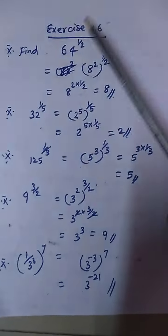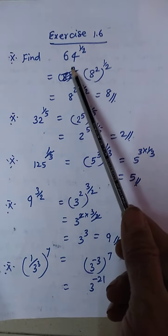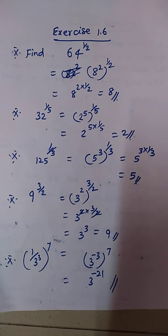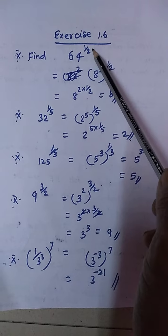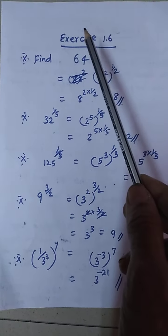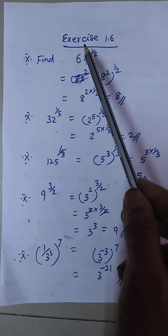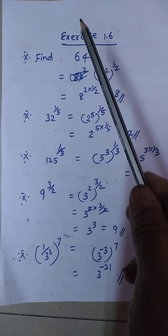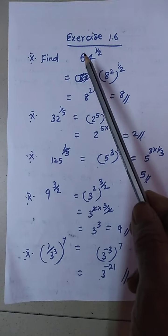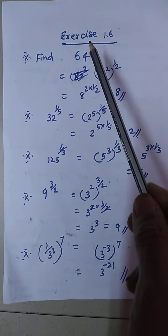Exercise 1.6. Find the value of 64 to the power 1 by 2. Power 1 by 2 means we have to find the square root of 64. We know root of 64 is 8 squared, that is 8, since 8 × 8 = 64. So root of 64 is 8.